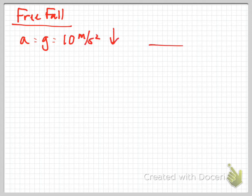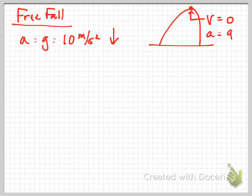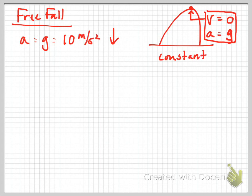In free fall, acceleration equals gravity: 9.8 meters per second squared downward, or approximately 10 meters per second squared down. Acceleration's unit is always meters per second squared. If we throw a ball up into the air and it comes back down, at the very peak of its motion the velocity is instantaneously equal to zero — but the acceleration at that point is still gravity. Gravity is acting on the object at all times, so it's constantly 9.8 meters per second squared downward.